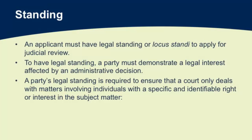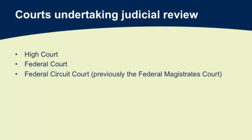When talking about judicial review, there are three courts involved. You have the High Court, on the basis specifically of section 75 of the Constitution. Then you have the Federal Court, and the Federal Circuit Court, which previously was called the Federal Magistrate's Court. It is not important in this course to deeply examine which of these courts has jurisdiction in a given case, as that is something better covered by civil procedure. It is sufficient to understand that as far as judicial review is concerned, it is typically these three courts that will be involved.